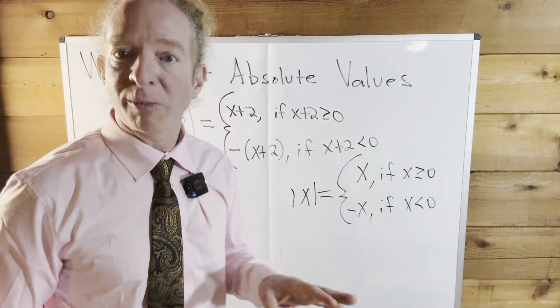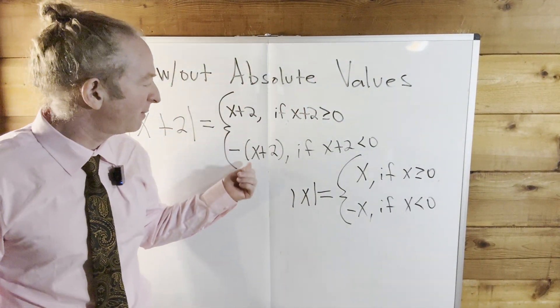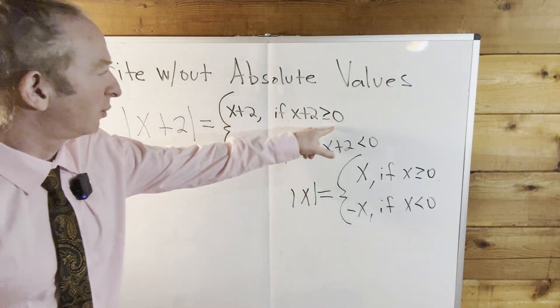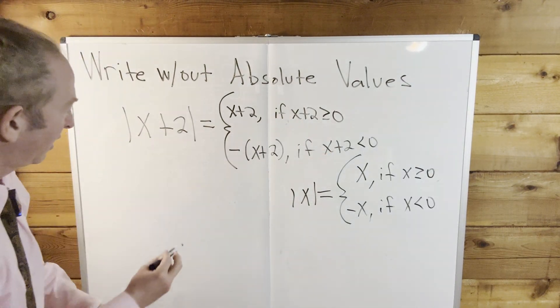So we're almost done. The only thing we have to do now is distribute. There's a minus 1 here. We're going to distribute that. And also we can rewrite this. So this is going to be equal to a piecewise function.